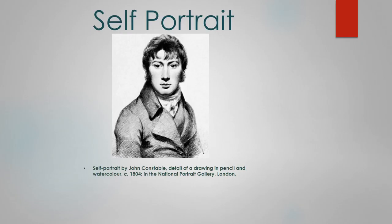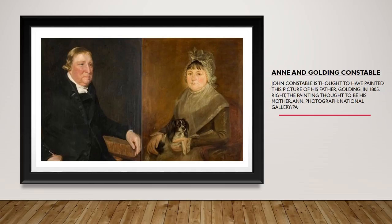John Constable was born on June 11th, 1776, in East Bergholt, a village on the River Stour in Suffolk, to Golding and Ann Constable. His father was a wealthy corn merchant, owner of the Flatford Mill in East Bergholt and later Dedham Mill. Even though John wasn't expected to live longer than a day, he became a healthy child who grew up to love the countryside. The Constable country remains at the center of what we may call the world of John Constable.